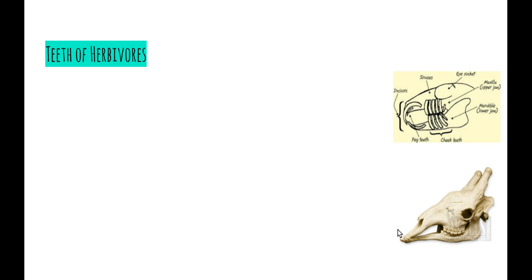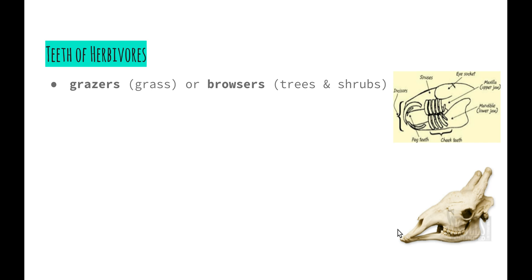Now let's look at the teeth of herbivores. If you've ever looked in the mouth of a herbivore — such as a pet rabbit, or horses and cattle on a farm — you'll see their teeth are very different to human teeth. Grazers are herbivores that eat grass, such as horses, cows and goats. Browsers are those that eat vegetation from trees and shrubs, such as koalas and giraffes. They have slightly different teeth because they have slightly different requirements to break down the food they eat.